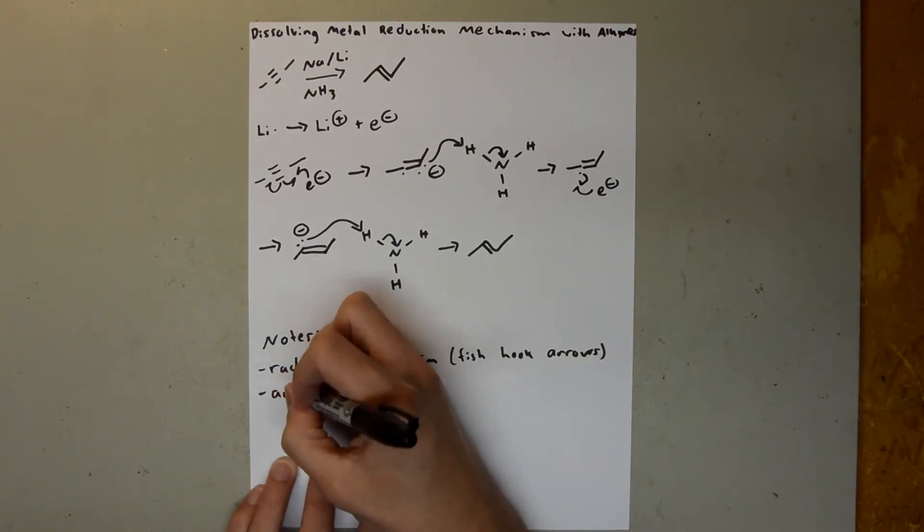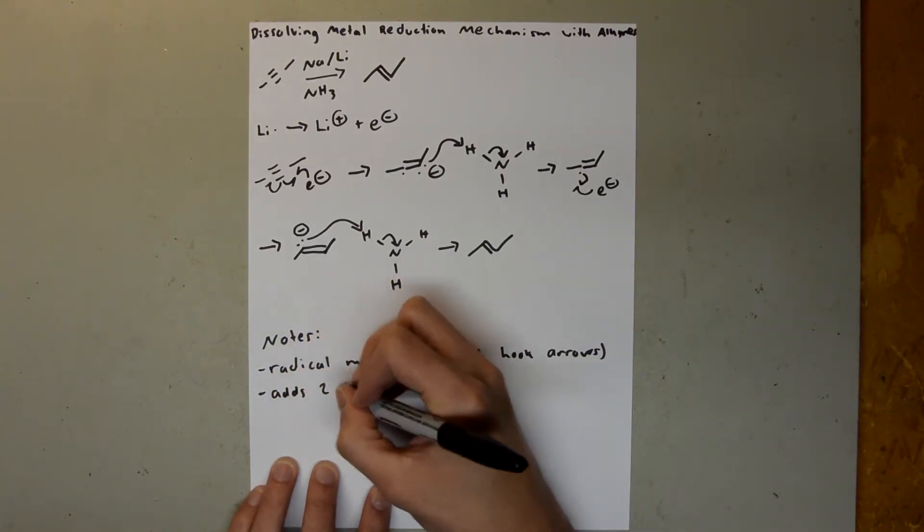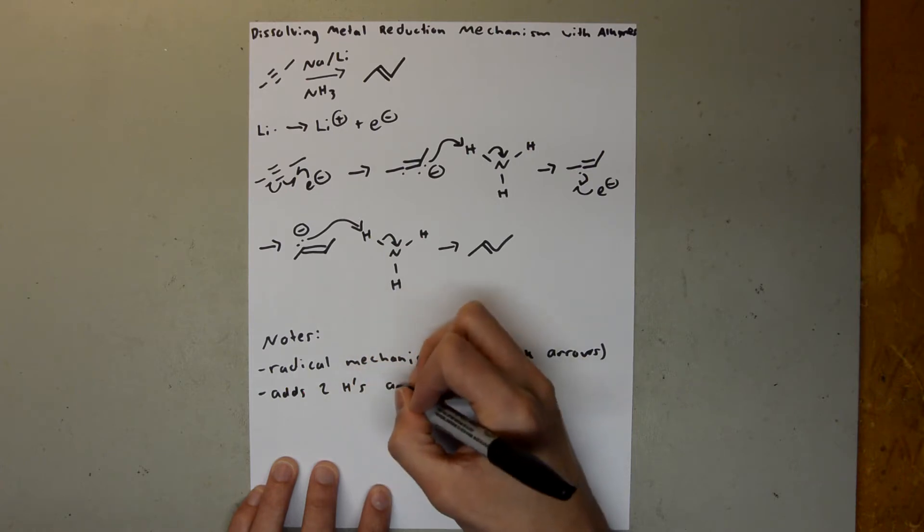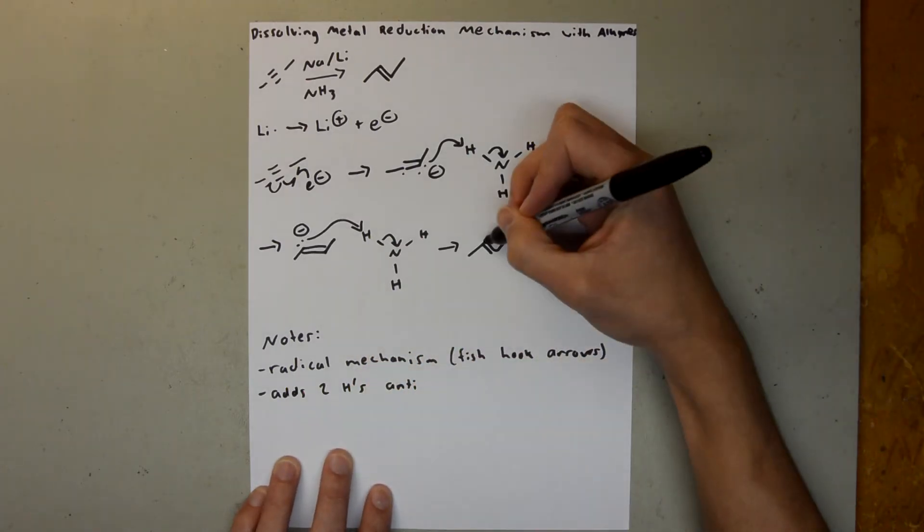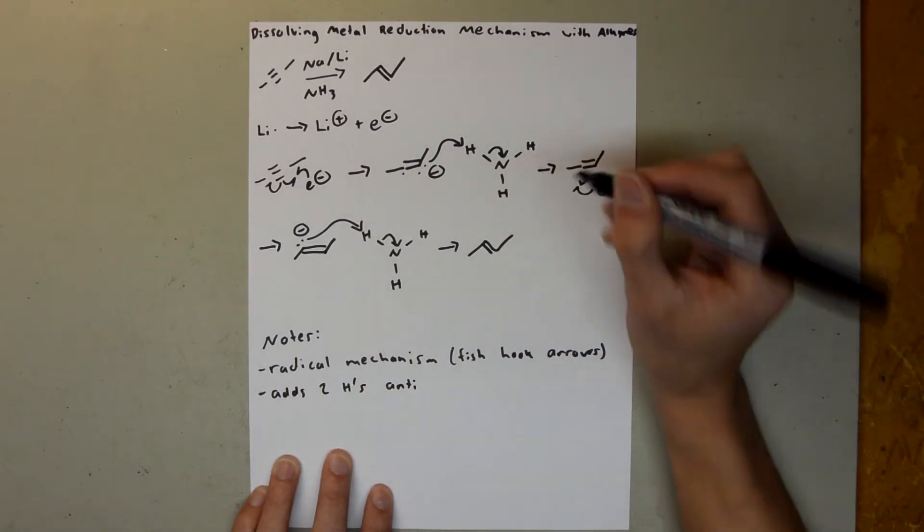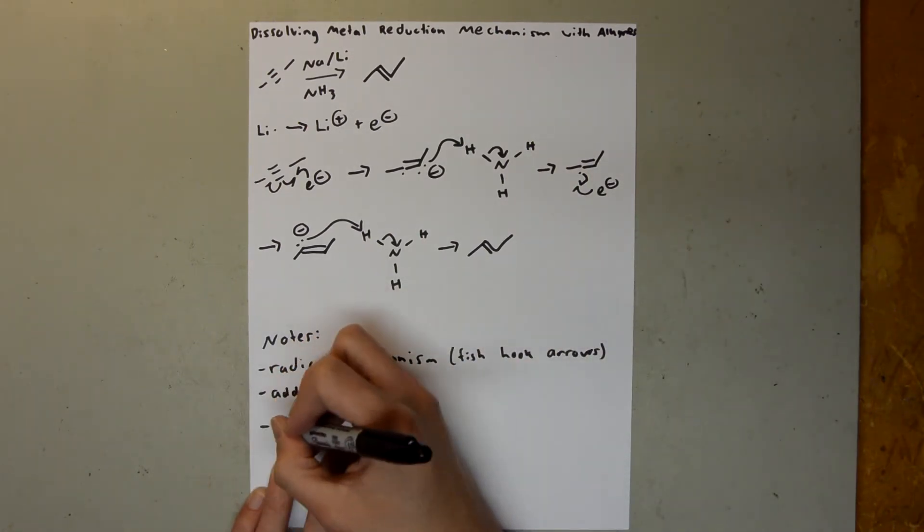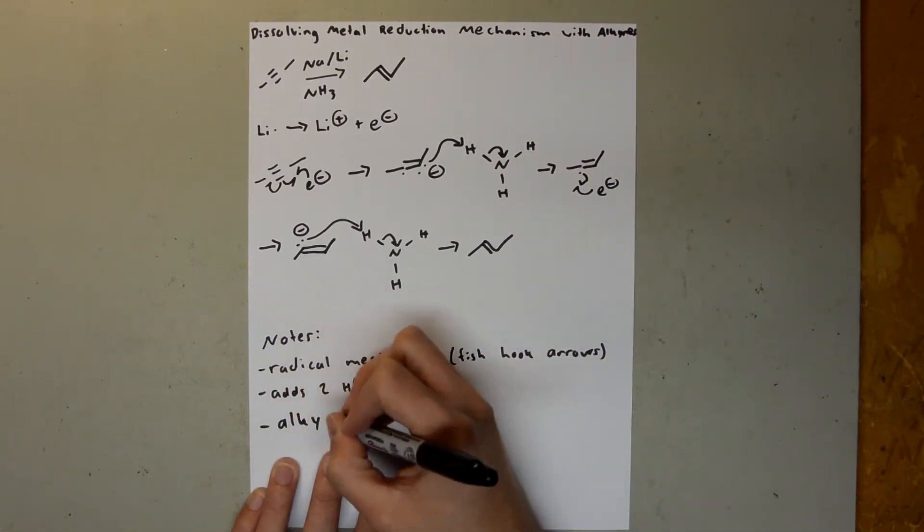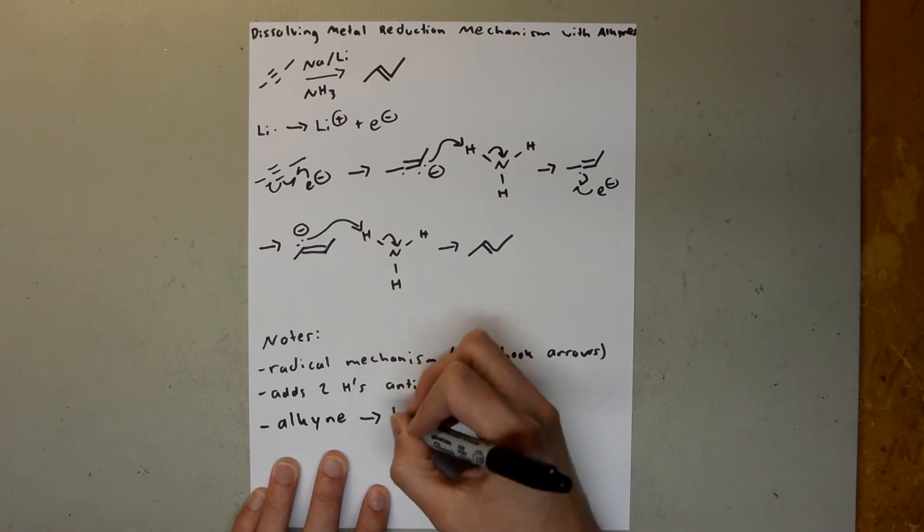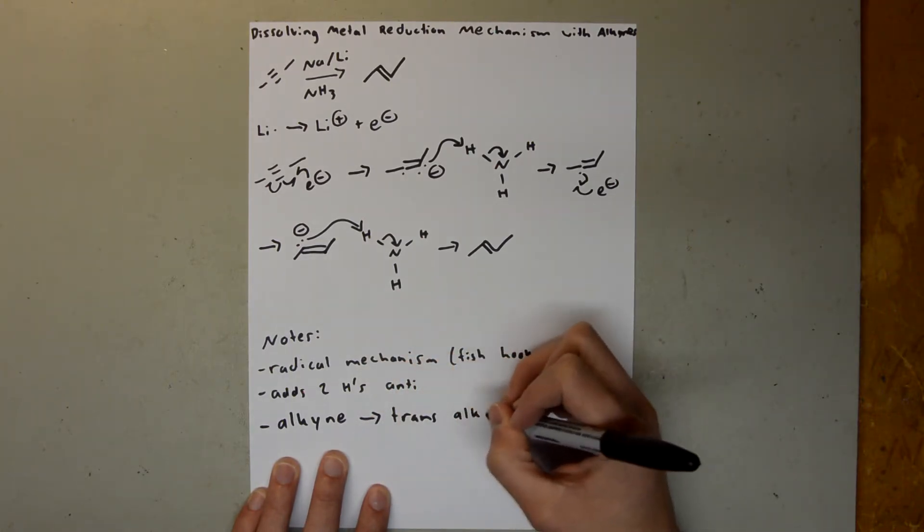It adds two hydrogens, anti, to one another. So here and here would be anti. And it turns an alkyne into a trans alkene.